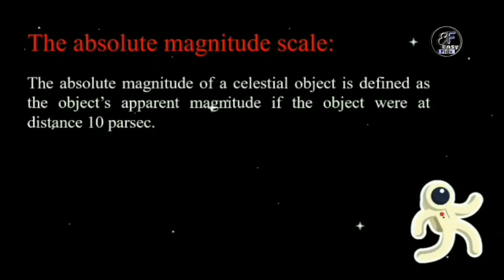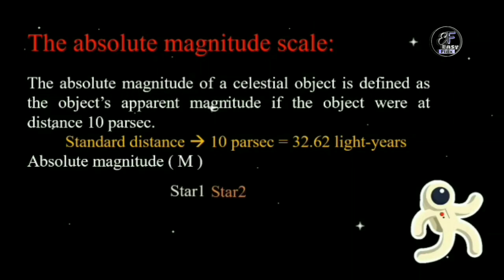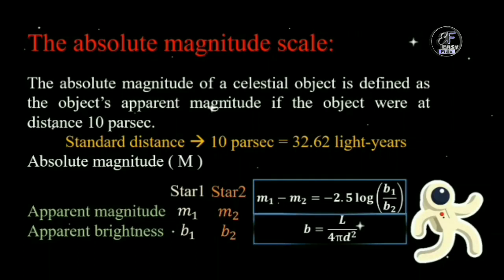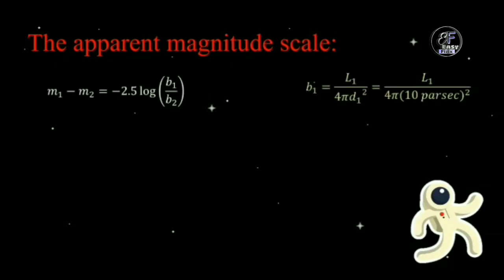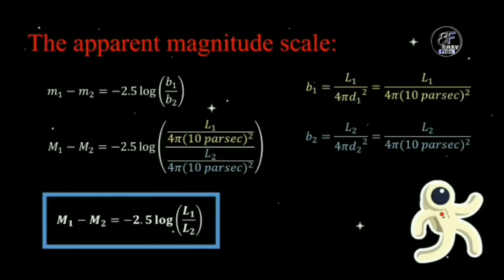Now let's discuss the Absolute Magnitude Scale. The absolute magnitude of a celestial object is defined as its apparent magnitude if the object were at a distance of 10 parsecs, which is considered the standard distance. The absolute magnitude is denoted by capital M. Using the relation M1 − M2 = −2.5 log(B1/B2) and substituting 10 parsecs for D1 and D2, we replace small m with capital M. We get M1 − M2 = −2.5 log(L1/L2). So if we know the luminosities of two stars, we can calculate the difference of their absolute magnitudes.